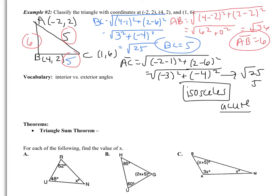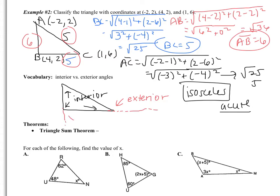One quick thing to discuss is the difference between interior and exterior angles. If I draw a triangle, the three angles inside are interior angles. An exterior angle is formed when you extend one of the sides — the angle formed outside is the exterior angle. We're going to need that for the next two theorems. The first is the Triangle Sum Theorem, which you've learned before: the interior angles of a triangle sum to 180 degrees.